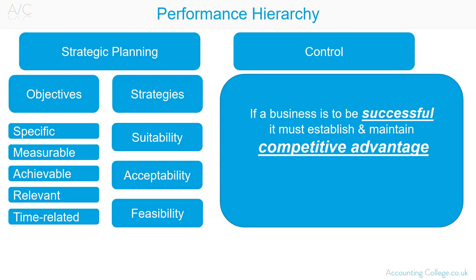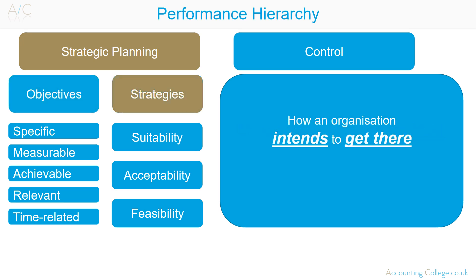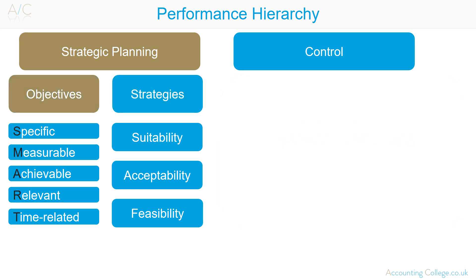Strategic planning is an organisation's objectives and strategies. Objectives is where an organisation wants to be, and strategies is how an organisation intends to get there. Objectives set by an organisation should be SMART: specific, measurable, achievable, relevant, and time-related.